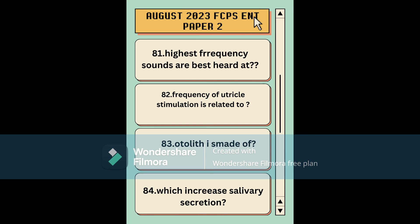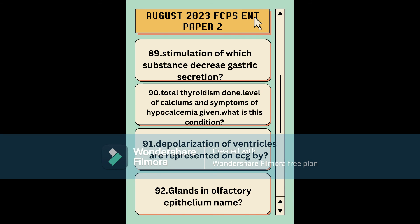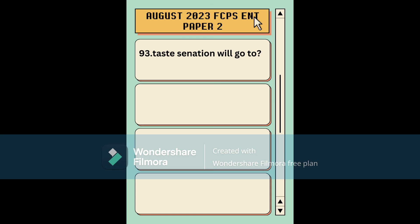Highest frequency sounds are best heard at which location. Frequency of utricle stimulation is related to otolith — I'm not sure of the exact wording. What increases salivary secretion. Action potential of the utricle. Decreased production of surfactant — what is the result. Dysphagia to liquids — what is the cause. Neurotransmitter of the basal ganglia. Stimulation of which substance decreases gastric secretion. Total thyroidectomy was done — calcium levels were given with symptoms of hypocalcemia and the condition was asked. Depolarization of the ventricles is represented on the ECG by which wave. Glands in the olfactory epithelium — I think the answer is Bowman's glands.